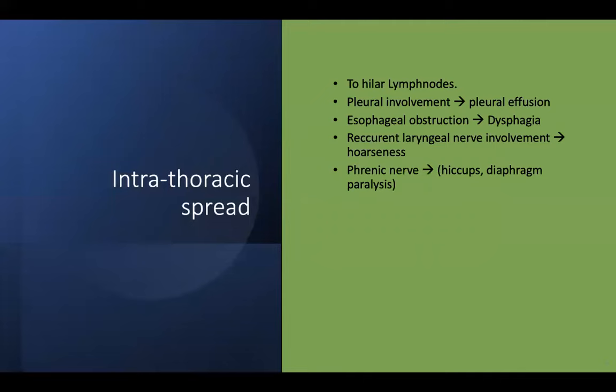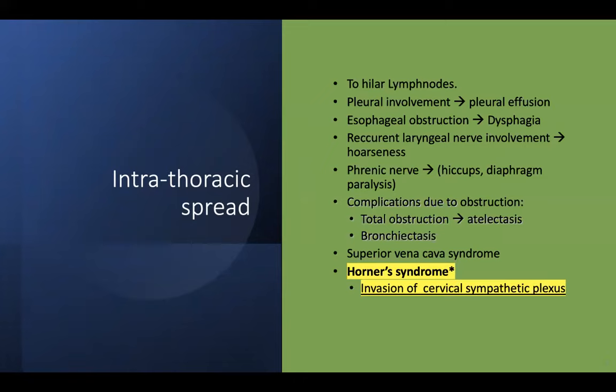The intrathoracic spread is particularly more important in case of Pancoast tumor. Intrathoracic spread could be due to the adjacent hilar lymph node, where it can give rise to enlarged hilar lymph node or hilar lymphadenopathy. Pleural thickening could be seen, and pleural involvement can also lead to a pleural effusion. Esophageal impingement often leads to dysphagia.